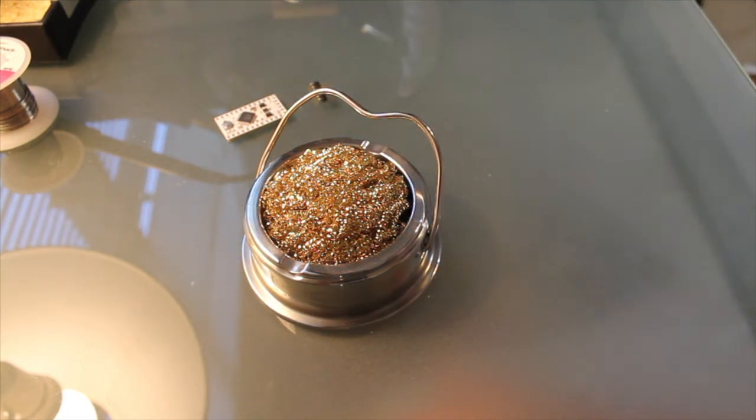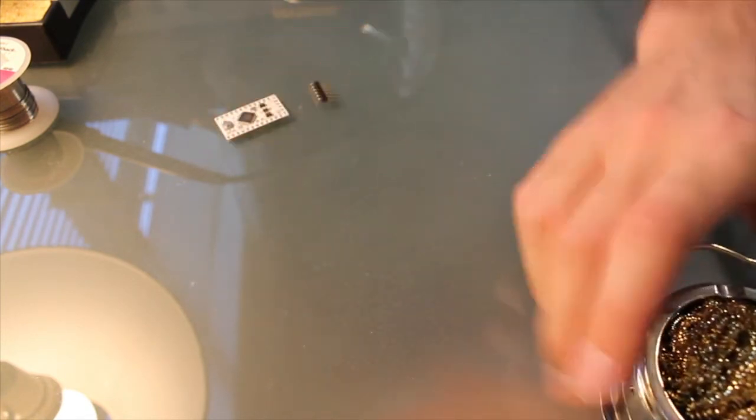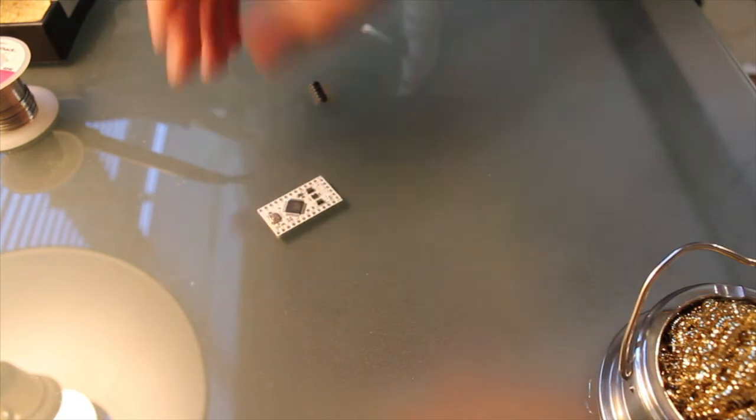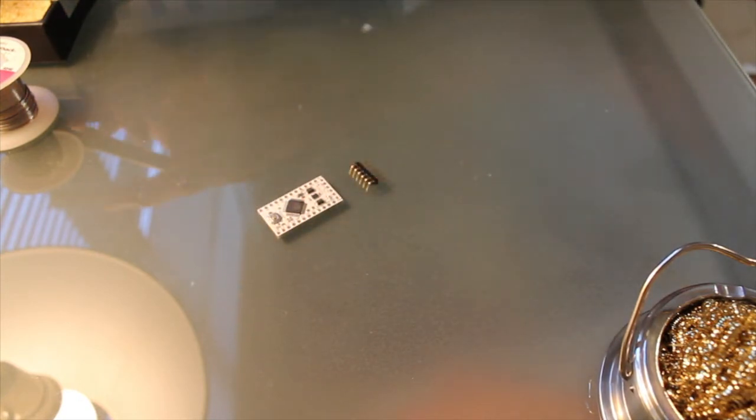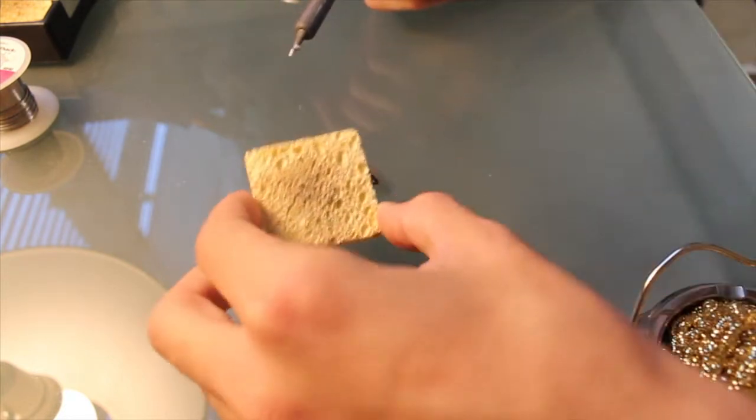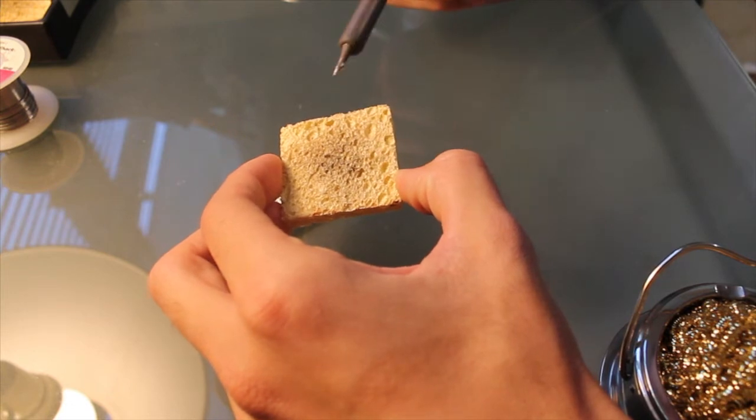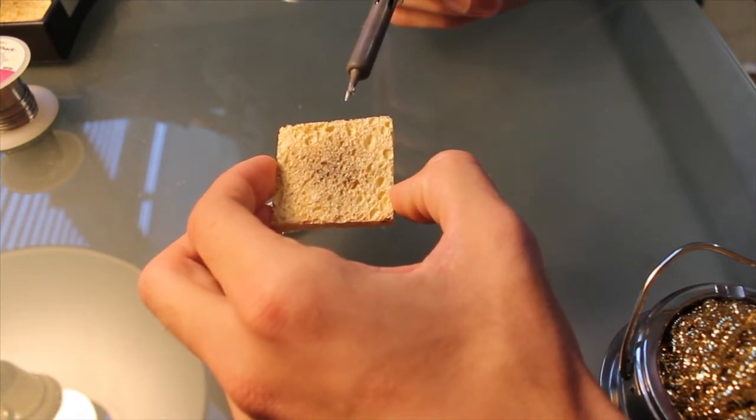So let's take a look at what we have and how these work. I have the Pro Mini here and I want to solder on some headers. Typically in the past I would have a wet sponge. I'd take the soldering iron and just move it back and forth or dab it on the wet sponge to get rid of the extra solder.